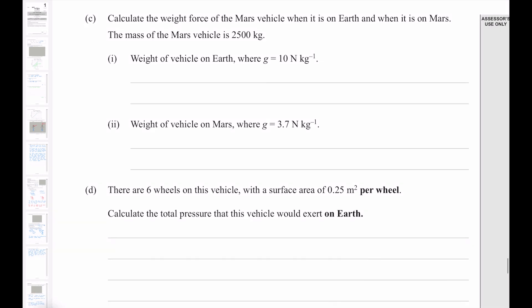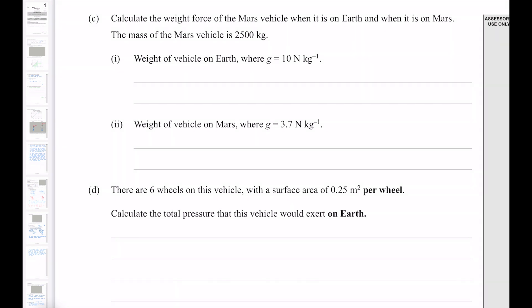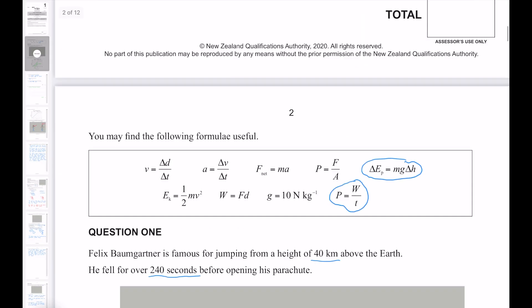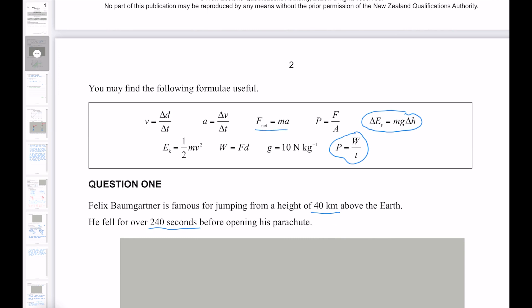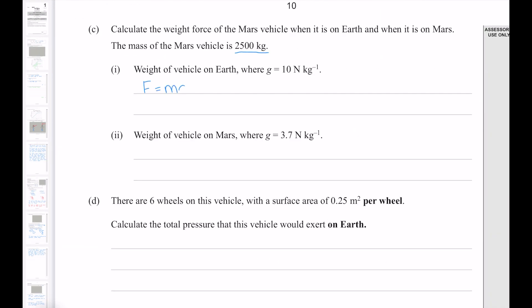Calculate the weight force of the Mars vehicle when it is on Earth and when it is on Mars. The mass of the Mars vehicle is 2,500 kilograms. Now as it's asking for weight, we are going to use this equation here, where our weight is our force of gravity, our mass is our 2,500 kilograms. And our acceleration is the acceleration due to gravity, which is our 10 on Earth and our 3.7 on Mars. And that gives us 25,000 newtons. And on Mars, 9,250.